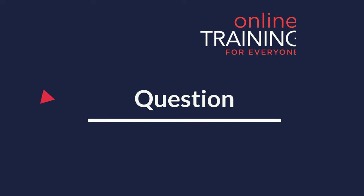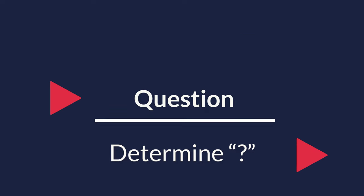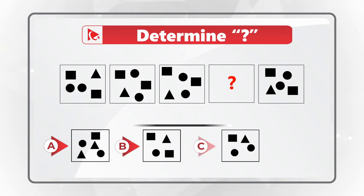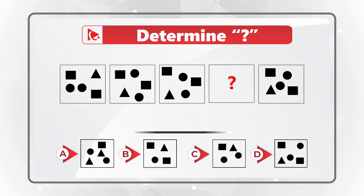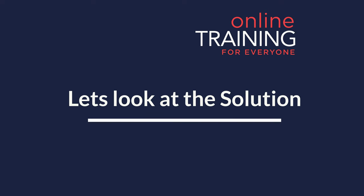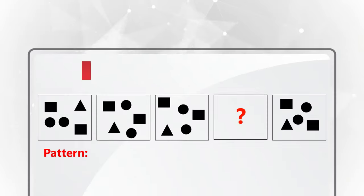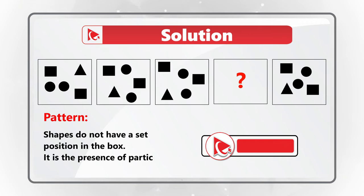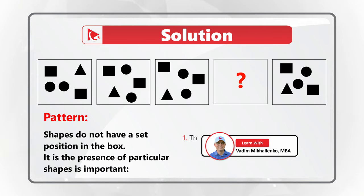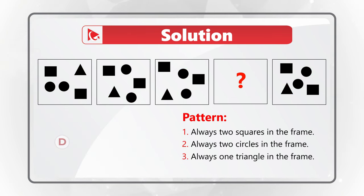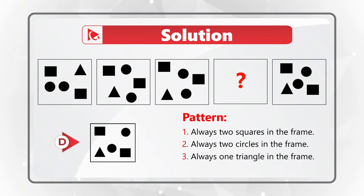Here's an amazing question to determine your pattern recognition skills. You're presented with five boxes; boxes one, two, three, and five have smaller shapes inside, and you need to select box number four from choices A, B, C, and D. The pattern has three variables: there are always two squares in the frame, always two circles in the frame, and always one triangle in the frame. So the correct answer is choice D.